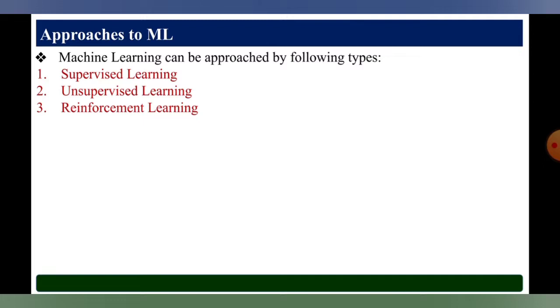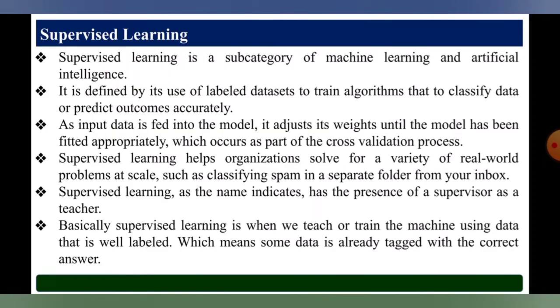Supervised learning is a subcategory of machine learning and artificial intelligence. It is defined by its use of labeled datasets to train algorithms that classify data or predict outcomes accurately. As input data is fed into the model, it adjusts its weights until the model has been fitted appropriately, which occurs as part of the cross-validation process.